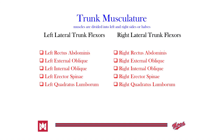Our trunk musculature is divided into right and left sides pertaining to lateral trunk flexion. Our left lateral trunk flexors are the left rectus abdominis, left external and internal obliques, left erectors, and left quadratus lumborum. The right lateral trunk flexors are the same muscles on the right side of the body to produce right lateral flexion.